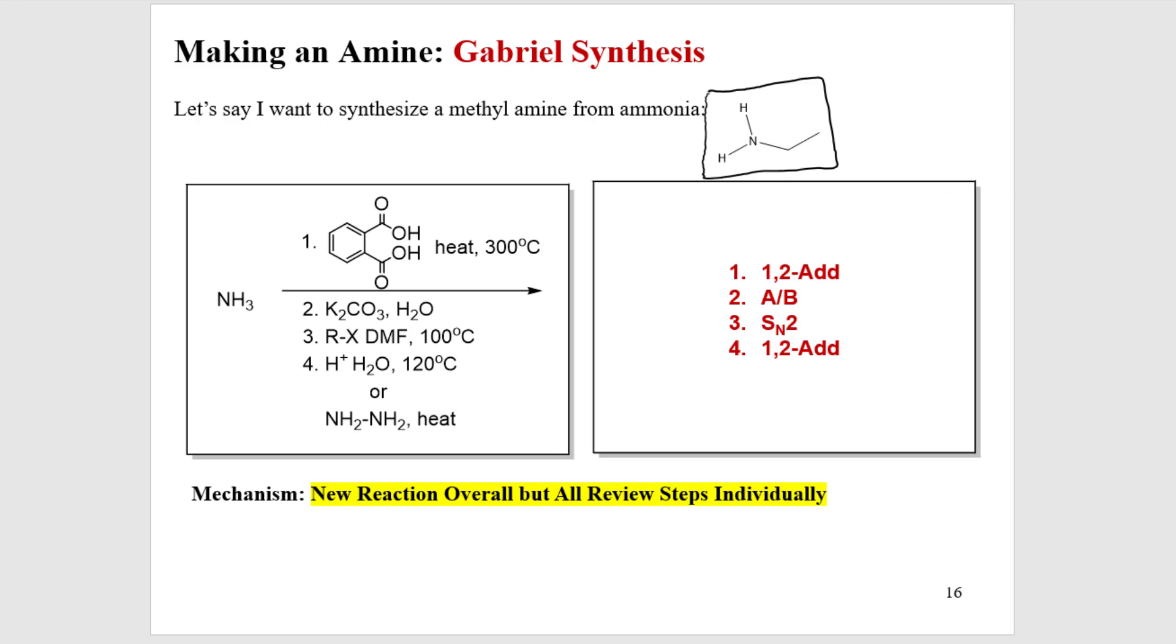The clamp is going to be this dicarboxylic acid. What we're going to do is we're going to create the imide. The NH3 is going to create an imide by in, up, down, out, and then in, up, down, out twice intramolecularly. That's how the clamp gets put on.